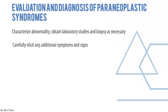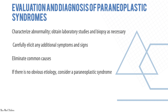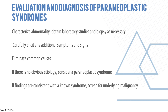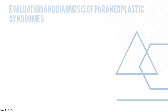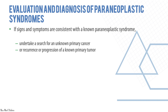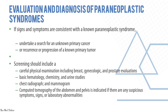For evaluation and diagnosis: characterize the abnormality and obtain laboratory studies and biopsy as necessary. Carefully elicit additional symptoms and signs, eliminate common causes, and if there is no obvious etiology, consider a paraneoplastic syndrome. If findings are consistent with a known syndrome, screen for underlying malignancy. Screening should include physical examination (breast, gynecology, prostate), basic hematology, chemistry, urine studies, chest X-ray, mammogram, and CT of abdomen and pelvis for any suspicious findings.